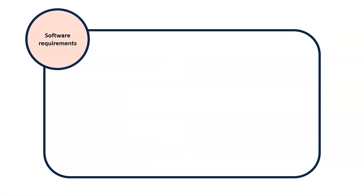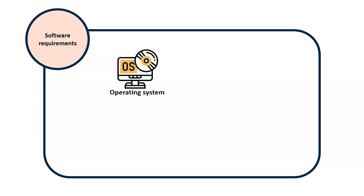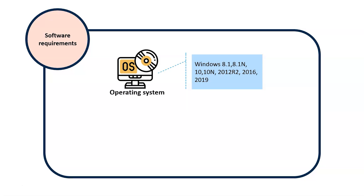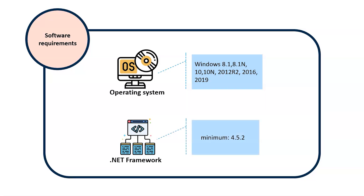Let us look at the software requirements. If you are using a Windows operating system, then Windows should be of version 8.1, 8.1 N, 10, or 10 N, and the Windows server should be of 2012 R2, 2016, or 2019 versions. Another prerequisite is to have a .NET framework of minimum version 4.5.2 installed.